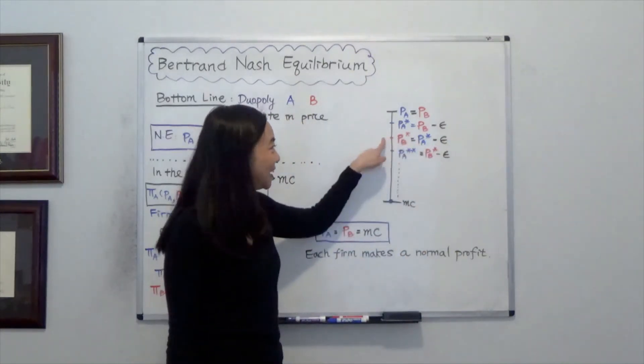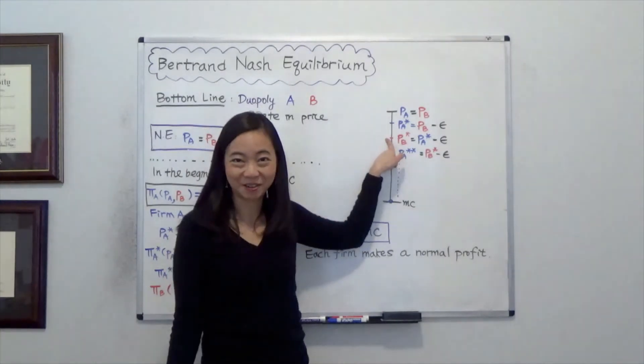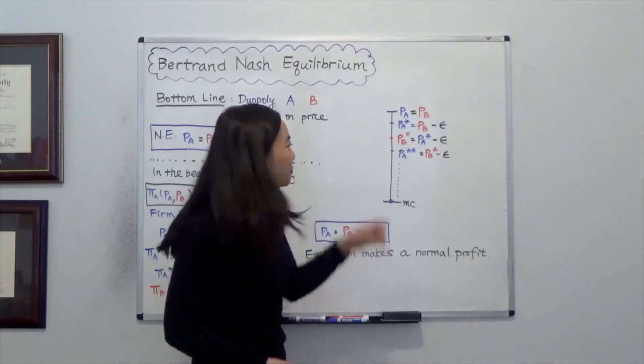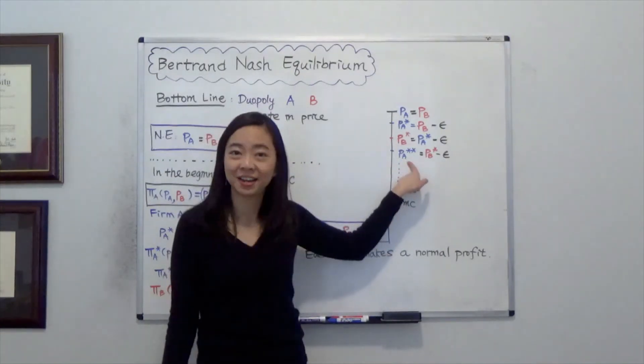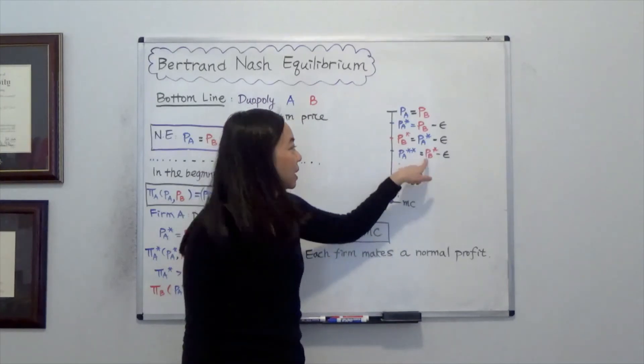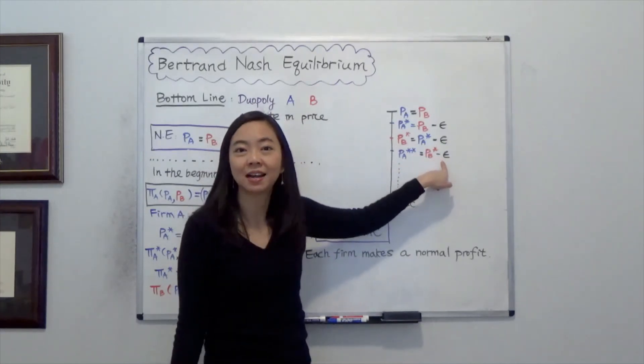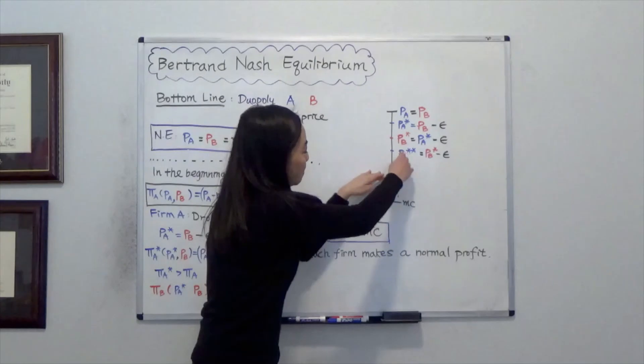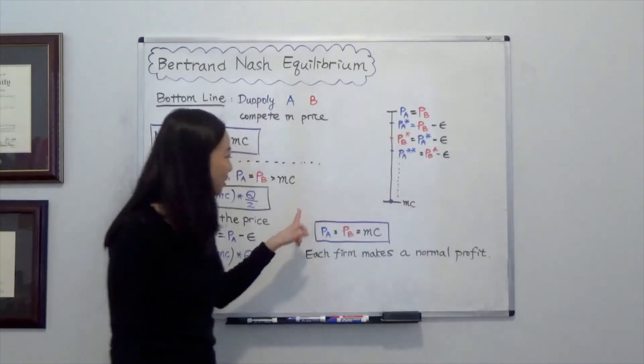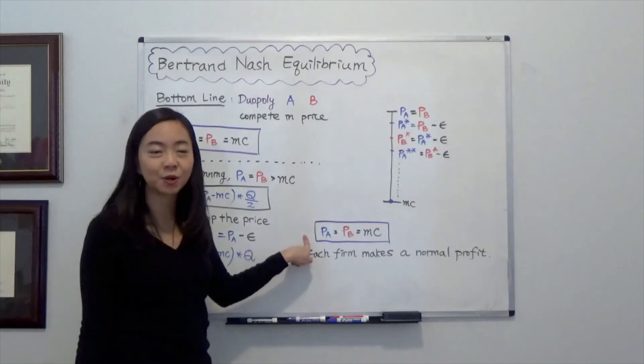So in this case, firm B is going to grab the entire market. And firm A is not going to sit there and be beaten up. So firm A is going to further lower the price. So the new price, PA double star, equals PB star minus epsilon. So both of them will keep lowering the price until they hit marginal cost.